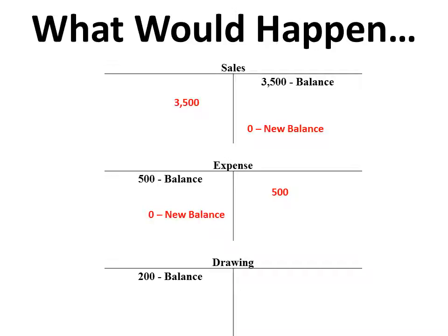Same with expense — it has a normal debit balance. What happens if I enter 500 as a credit? It goes to zero. Drawing — same thing. If I have a $200 debit balance and I enter $200 as a credit, what would happen? It would give me a zero balance. If you can understand that concept, we need to basically zero out these revenue and expense accounts. This is the whole concept of this lesson.